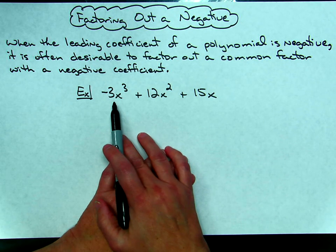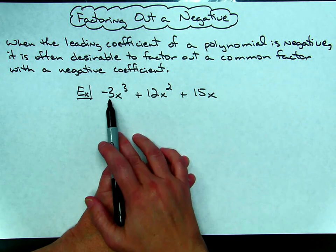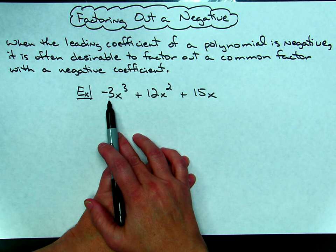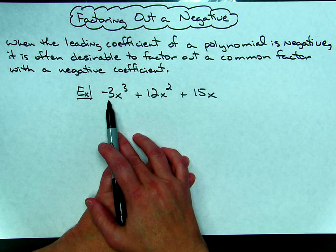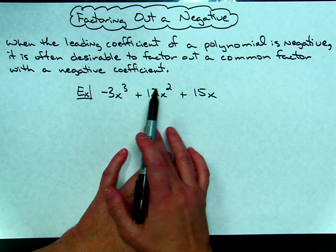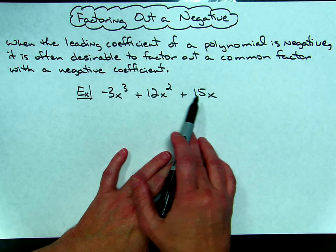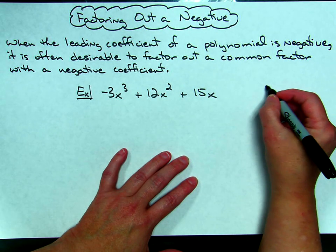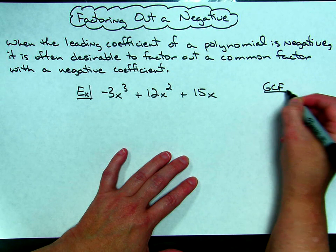In this example right here I have a polynomial, my leading term has a negative coefficient, so that's going to tell me when I do this I'm going to take out a negative factor. Now I'm going to go ahead and factor like normal, I'm going to look at the 3 and the 12 and the 15. The greatest common factor that I can take out of all of those would be a 3.